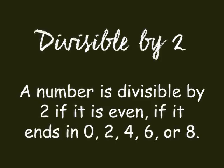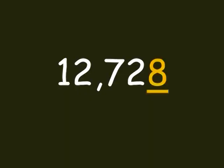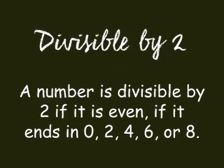Ano nga ba yung even numbers? Yung numbers na nagtatapos sa 0, 2, 4, 6, or 8. So, is 12,728 divisible by 2? It is. 12,728 ends in 8. 8 is an even number. So 12,728 is divisible by 2. Ito yung shortcut or rule para malaman natin if a number is divisible by 2.